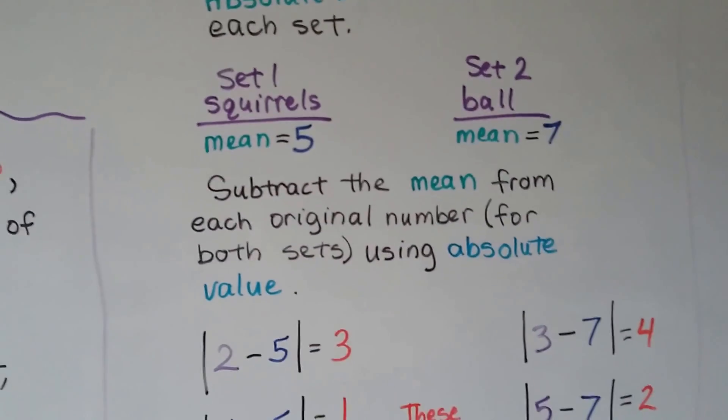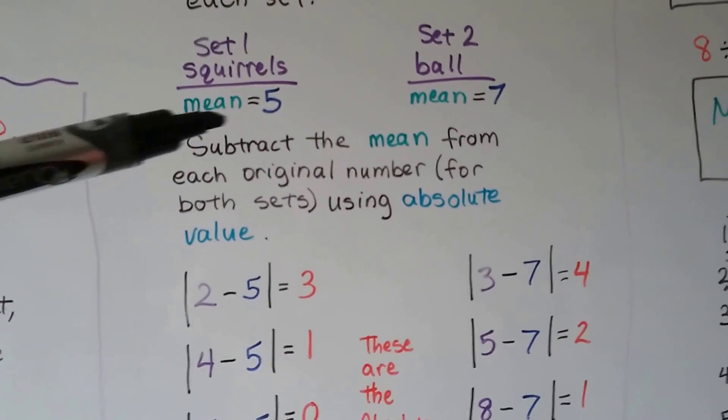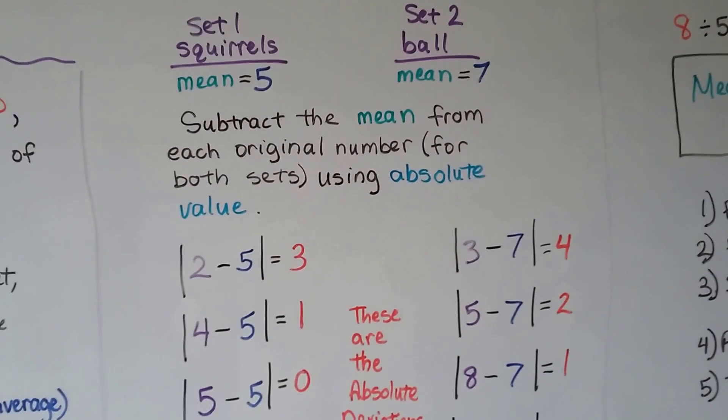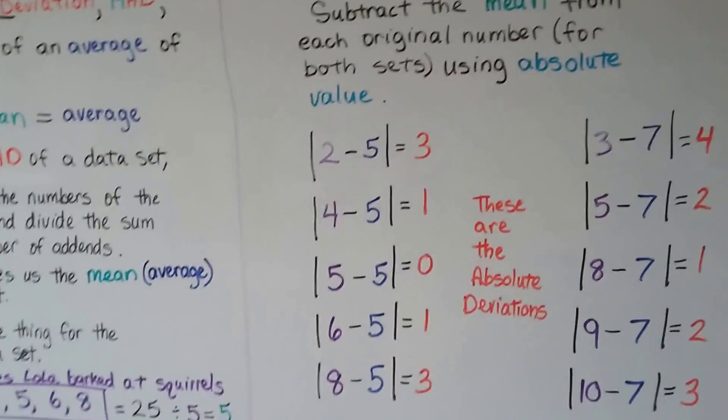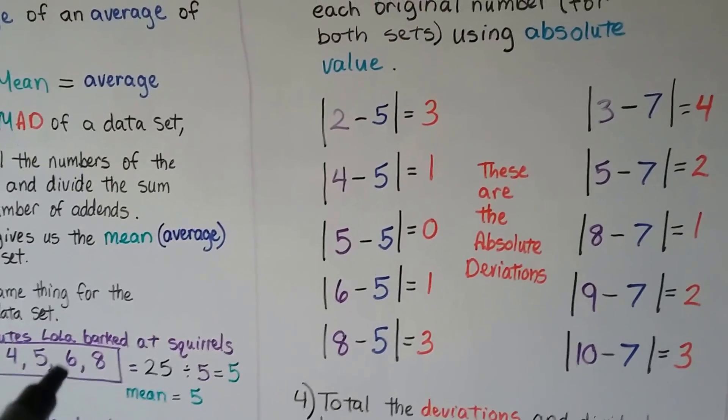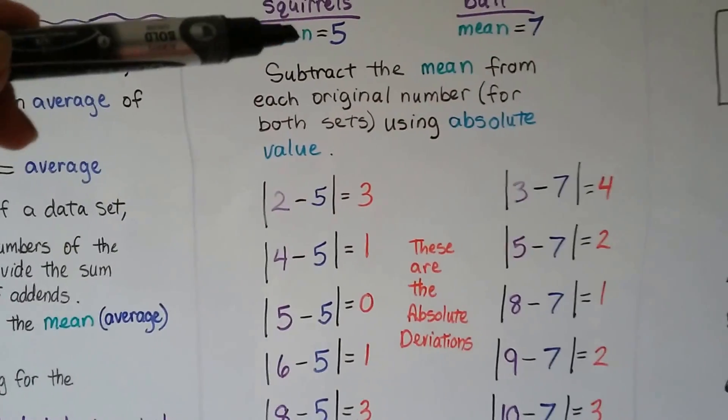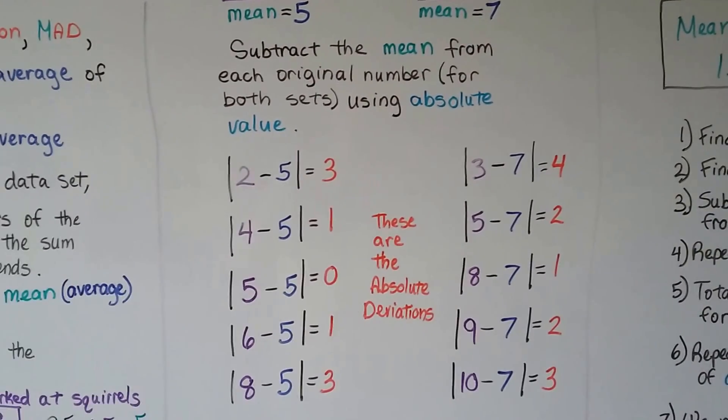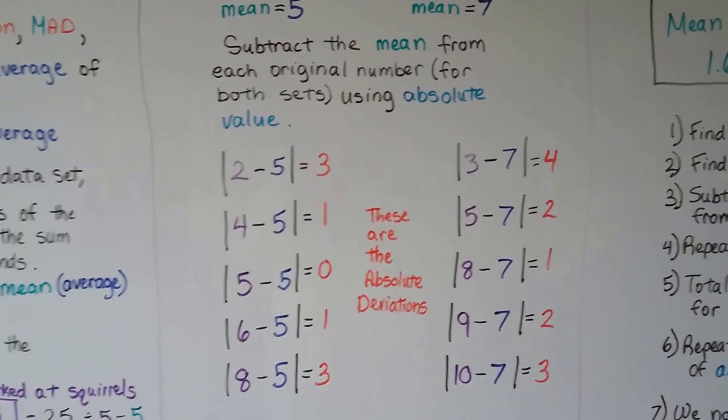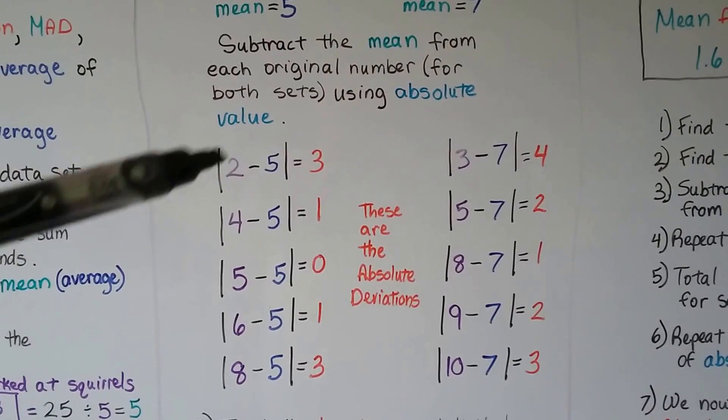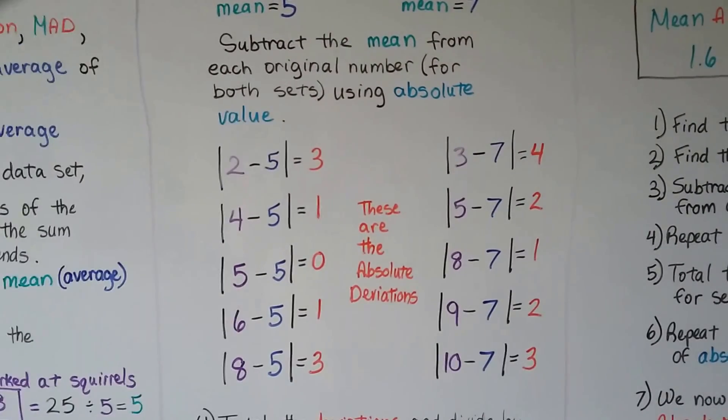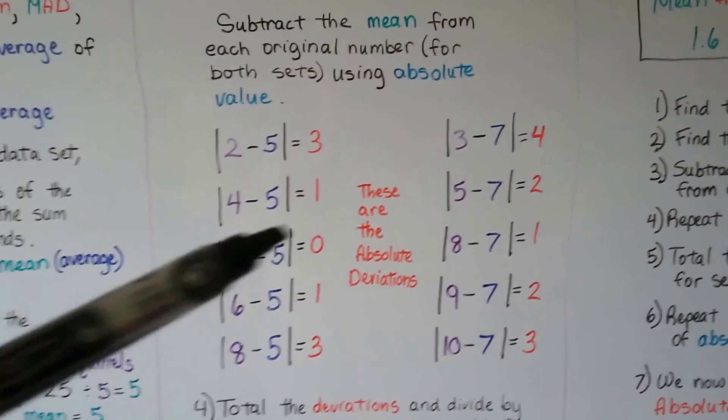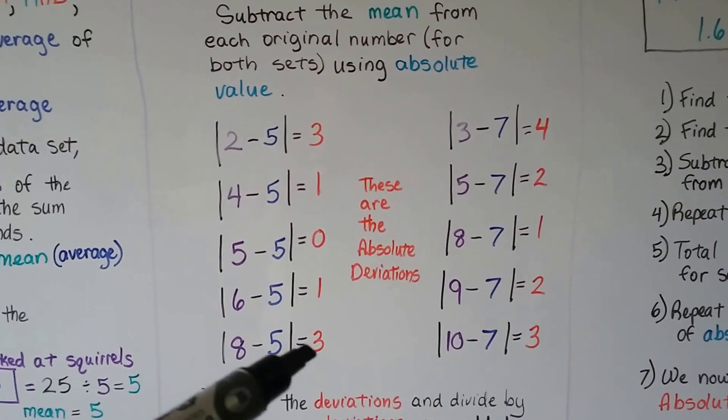Now, what we're going to do is, we're going to subtract that mean from each original number for both sets using absolute value. We had a 2, 4, 5, 6, and 8. We're going to subtract this 5 from the 2, 4, 5, 6, and 8 using absolute value. That means no negatives. We just find the difference between a 2 and a 5, and it's 3. The difference between a 4 and a 5 is a 1. The difference between 5 and 5 is 0. We get another 1, and we get a 3.